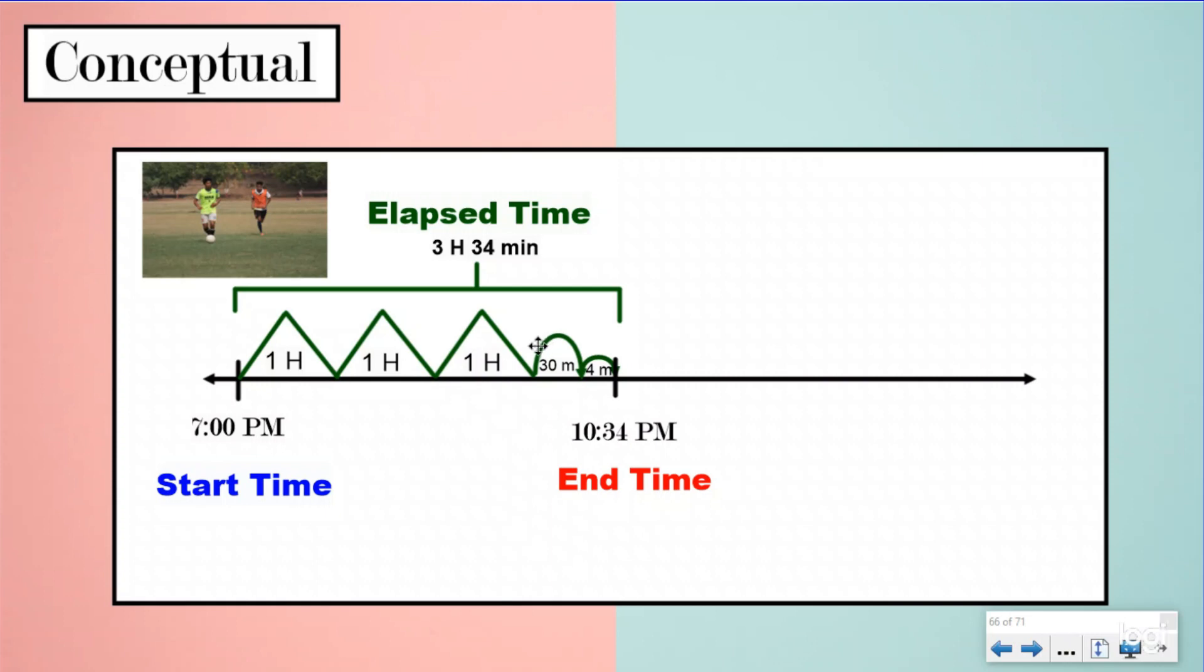And the elapsed time, which is the time in between the start time and the end time, or in other words, the amount of time that an event took was 3 hours and 34 minutes. Those are the vocabulary words that we've been talking about during this unit. We have already taken the start time and the elapsed time and found the end time. We've taken the end time and elapsed time and went backwards in time to find the start time.